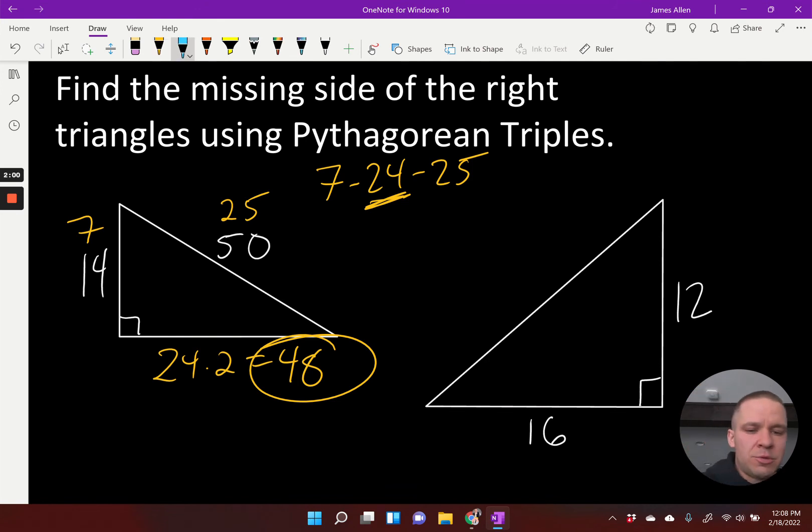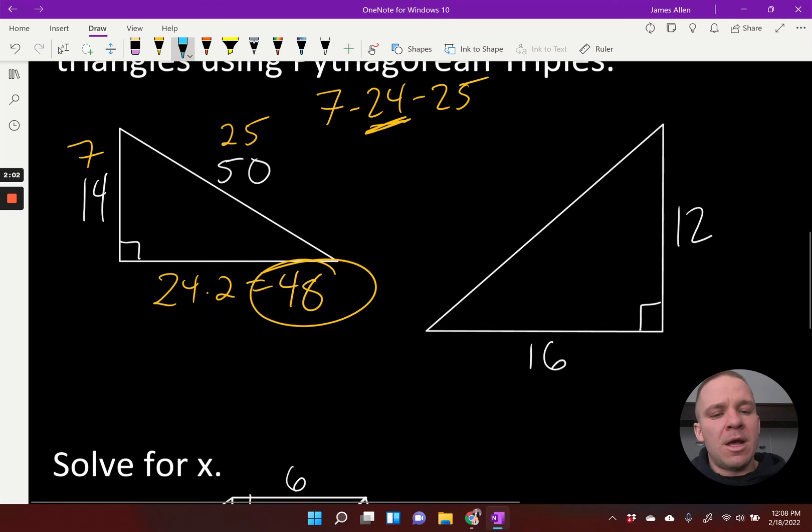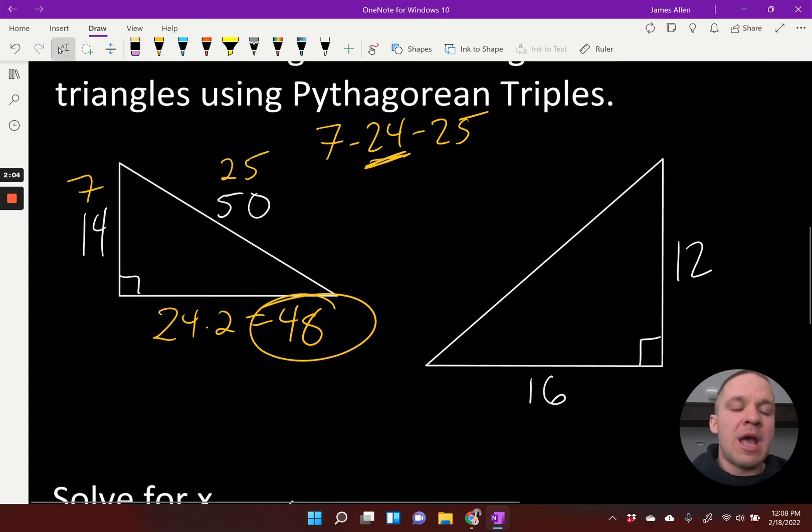So for this next one here, I got 12 and 16. Hmm, again, not one of my triples. So how about this? If I cut 12, let's divide that by 4. We can divide both of these by 4. So if I divide this by 4, I'd get 4. And if I divide this by 4, I'd get 3. Ooh, perhaps it's a 3, 4, 5 triangle that has been quadrupled, multiplied by 4.